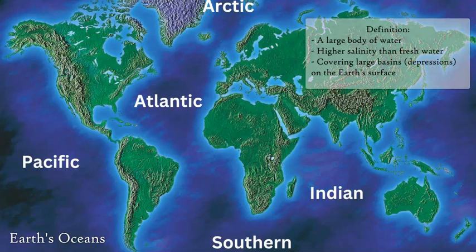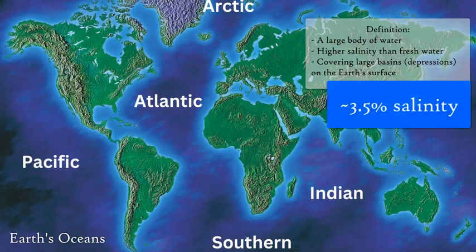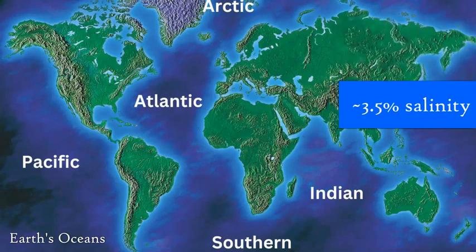An ocean is defined as a large body of water over an ocean basin, which is a depression area of the Earth's crust where water has filled in and covered up to a certain point, which is how we define land versus ocean. The main oceans are the Pacific, Atlantic, Southern Indian, and the Arctic. The oceans are generally salt water, which is about 3.5 to 3.7 percent concentration of salt.